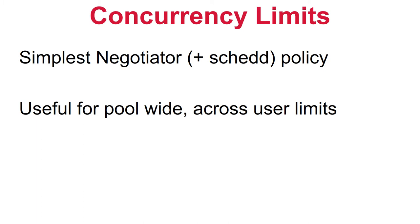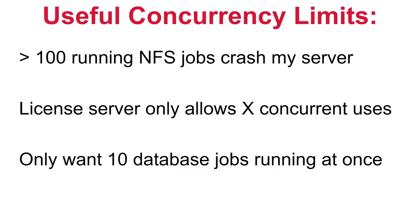Let's start with one of the simplest possible negotiator policies: concurrency limits. Concurrency limits are implemented in both the SchedD and the negotiator, but configured in the negotiator. They are very useful and easy to understand, yet many pool administrators don't know much about them. Because they exist in the negotiator, they can enforce pool-wide limits in ways that neither the SchedD nor the StartD alone can. Examples include limiting NFS jobs to 100 because the NFS server crashes beyond that, limiting licensed software to a fixed number of instances, or capping active database connections from jobs at 10.